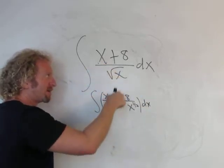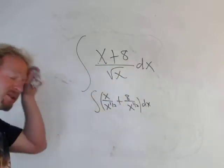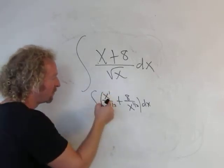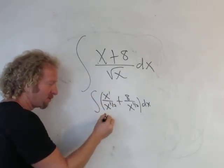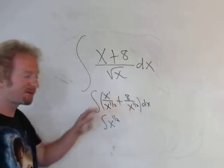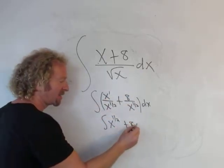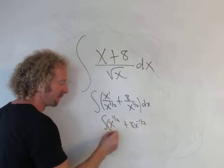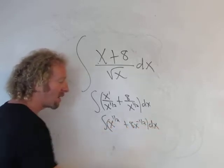It's just this over this plus this over this. And now we're ready to simplify. There's a one here, you can just subtract the exponents - 1 minus 1/2 is 1/2. And then here you can bring this guy upstairs, it becomes negative, so plus 8x to negative 1/2 dx.